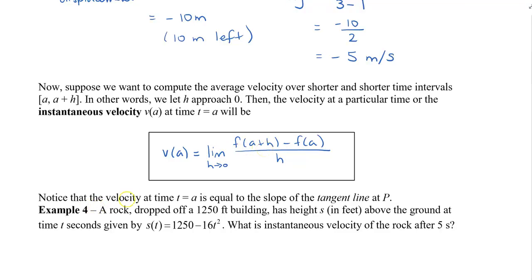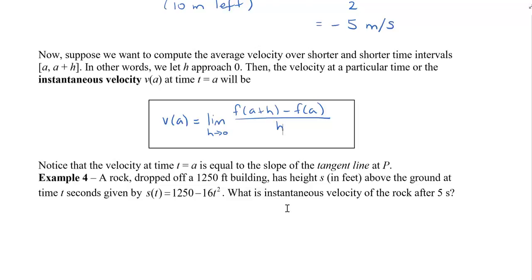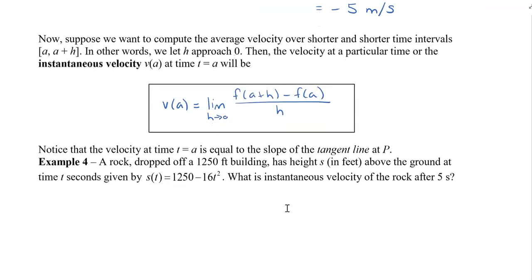Notice that the velocity at time T equals A is equal to the slope of the tangent line at that point P. For a new example, suppose we have a rock dropped off a 1,250-foot building. It has a height S in feet above the ground at time T seconds, given by the position function S of T. We want to find the instantaneous velocity of the rock at 5 seconds.